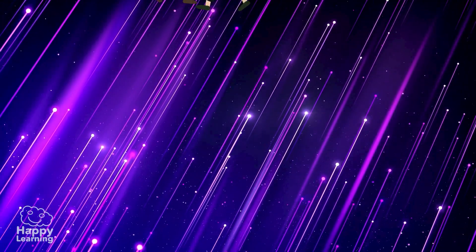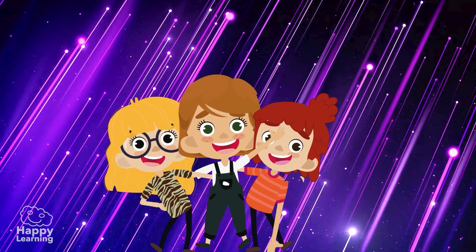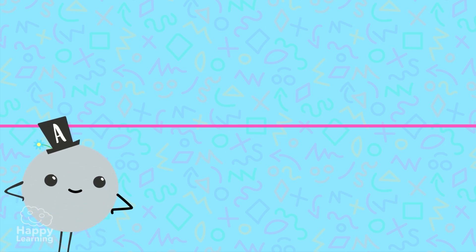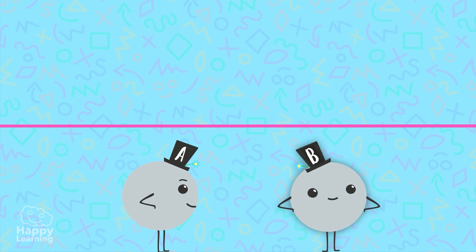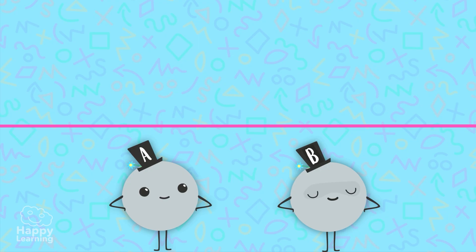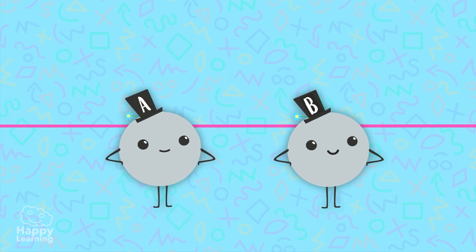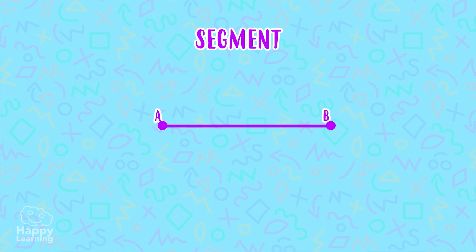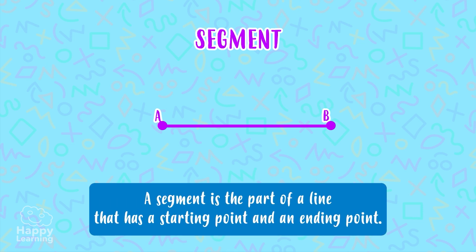Now that we know the ray, let's go back to our line. Suppose we cut it at two points. Mr. Point A, can you call a colleague? Thank you. Point B, can you please stand on the line? This infinite line is cut by two points: point A and point B. What is in the middle is called a segment — a segment we're going to call AB. A segment is the part of a line that has a starting point and an ending point.